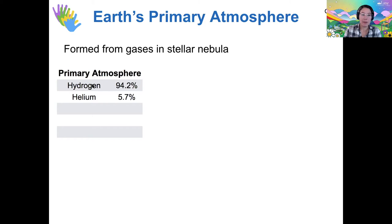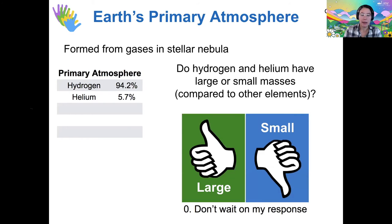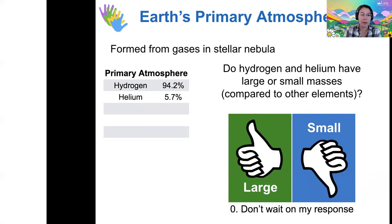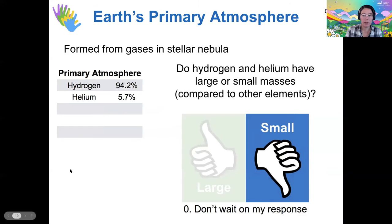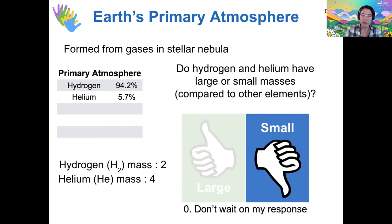This primary atmosphere was majority hydrogen. The question is: do hydrogen and helium, the components of this atmosphere, have large or small masses compared to other elements? Most votes say hydrogen and helium are small — and that's exactly right. Hydrogen has an atomic mass of 2 in the form of hydrogen gas, helium has a mass of 4, and those are very small compared to all other elements. Everything else is heavier.